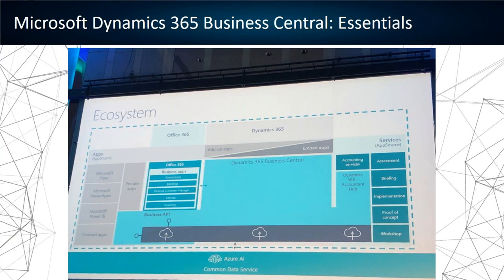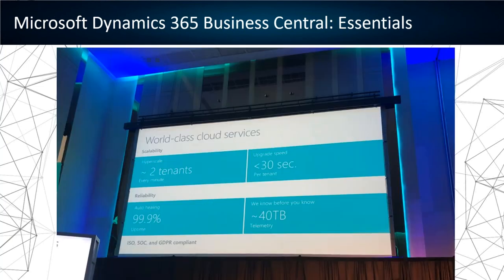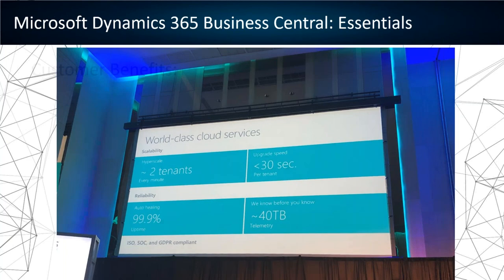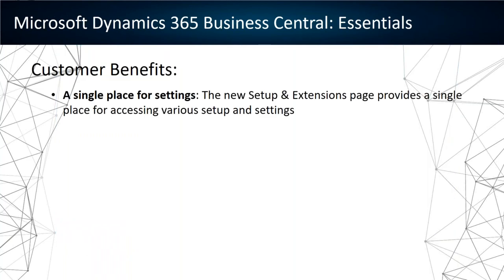Here you can see the typical ecosystem slide, now depicted in the classical color scheme of the Business Solution. Dynamics 365 Business Central is now part of the global Microsoft ecosystem — it's not just an ERP but part of the infrastructure Microsoft provides to customers. It's a world-class cloud service with extremely short upgrade times, great telemetry, and extremely reliable uptime. It offers quite a lot of customer benefits.